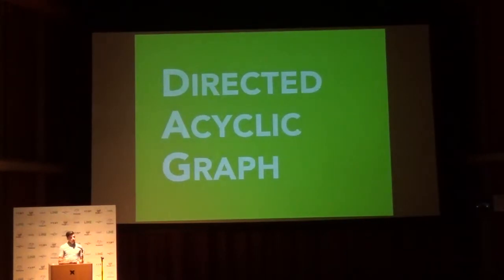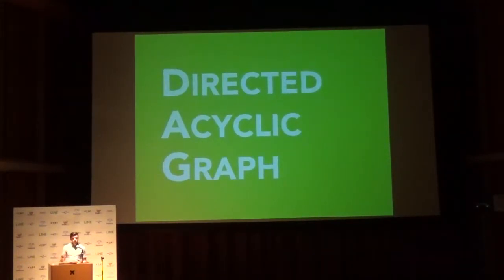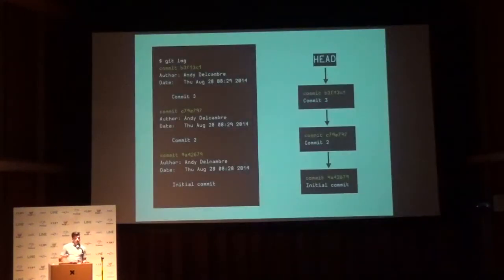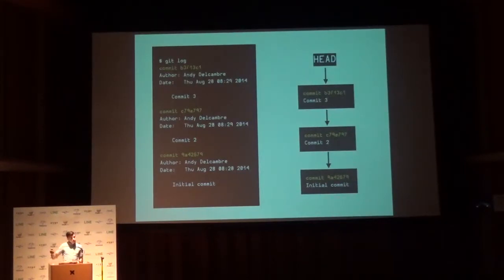Everything in Git is stored in what we call the DAG — the Directed Acyclic Graph. Basically, everything in Git is stored in a large set of objects, and then there are pointers between all the objects forming a graph. When we think about the DAG in Git, we have a list of commits. You can follow each commit backwards through history, following each parent, all the way down. So if you run git log, this is how we traverse that history.